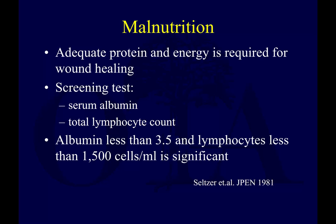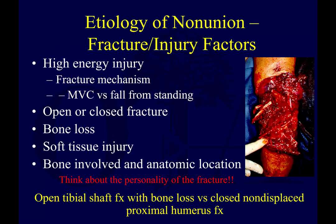Malnutrition is something we probably need to do a better job addressing in many of our patient populations. Adequate protein and energy are required for wound healing. Screening patients by checking serum albumin and total lymphocyte count can give a clue — albumin less than 3.5 and a lymphocyte count less than 1,500 may indicate malnutrition and put your patient at risk for a non-union.